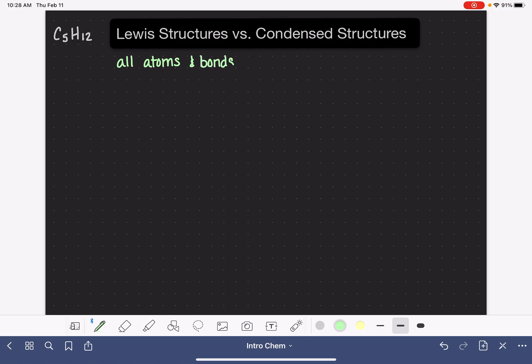I'm going to use my C5H12 example. A Lewis structure for C5H12 could look like this, where we are drawing all five of the carbon atoms. We're drawing all 12 of the hydrogen atoms and we're showing every single bond that is connecting the hydrogen atoms and the carbon atoms together. The Lewis structures show literally every single thing about the molecule.